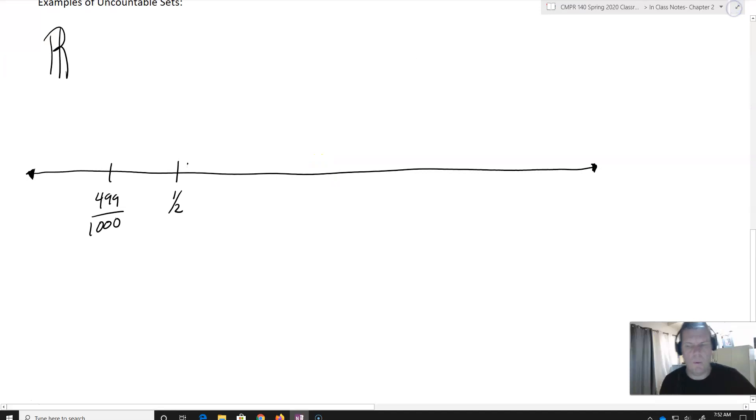Actually, that would be on the other side. Now, what I do know is that in between 499 out of 1,000 and one half, I'm actually going to be able to find another value. So there actually is, say, for example, I'll have 4,999 out of 10,000. That's also just slightly less than one half, but it's more than 499 out of 1,000.